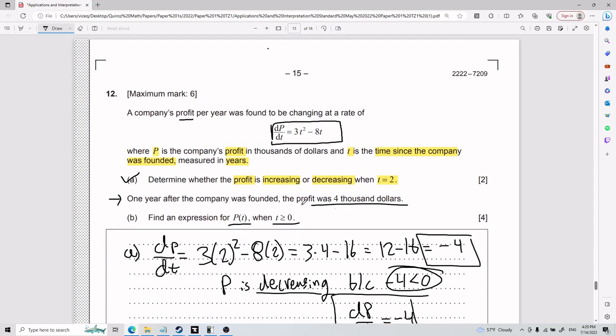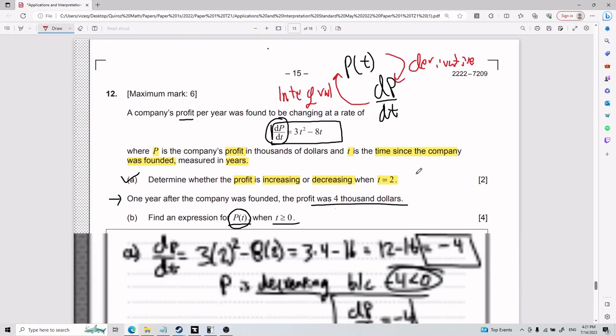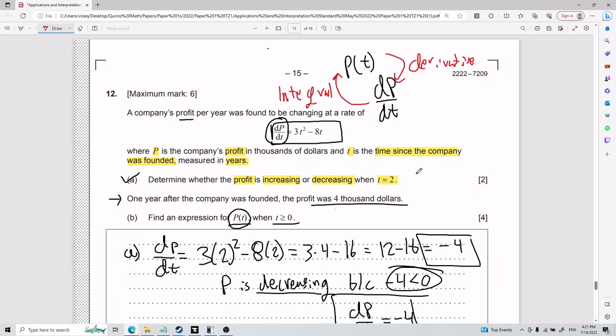So notice, here we have the derivative of P with respect to t. If you want to go back to just P(t), you have to do the integral. What do I mean by this? If I have P(t) and I want to go to dP/dt, I have to do the derivative. If I want to go back from dP/dt up here, I need to do the integral.